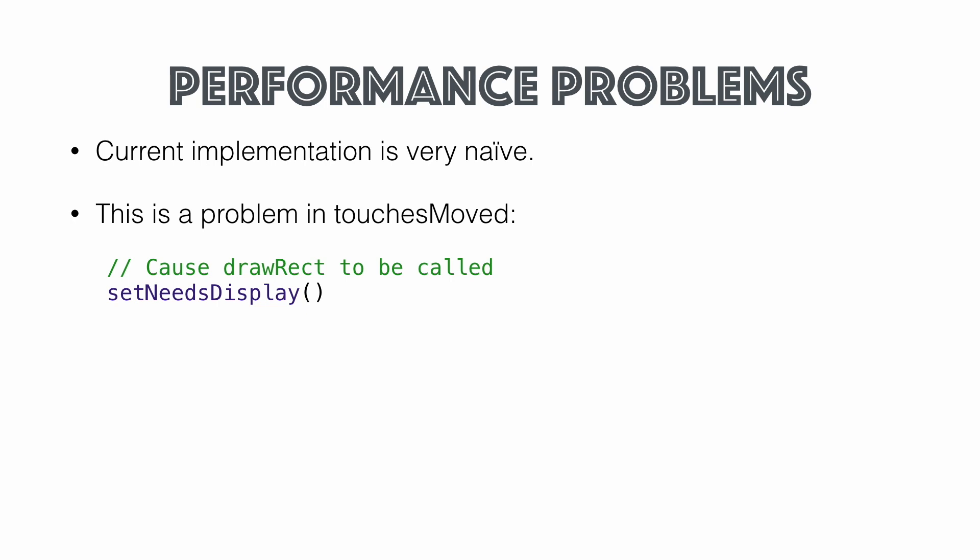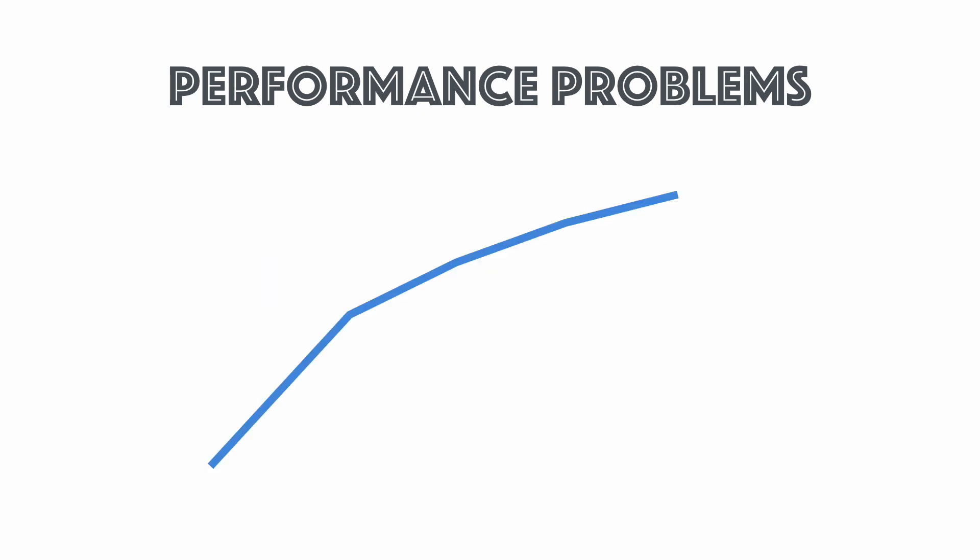Our current implementation is fairly naive — there's a problem in touchesMoved where we're calling setNeedsDisplay and refreshing the entire screen. Let's see how we can improve that. Say I'm drawing this line on the screen and the orange part is the last segment drawn — I don't need to redraw the entire path every time. All I need to draw is that little orange part. If I can figure out the rectangle of that part and pass it into setNeedsDisplay, it will only refresh that portion.